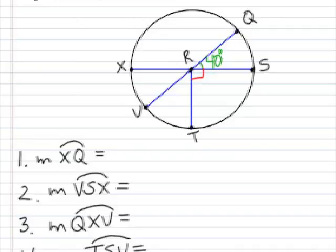We've got number one, the measure of arc XQ. Now since X and Q are two letters, that is a minor arc because it goes less than halfway around the circle. And obviously I'm looking at this arc here, the curved part between X and Q.